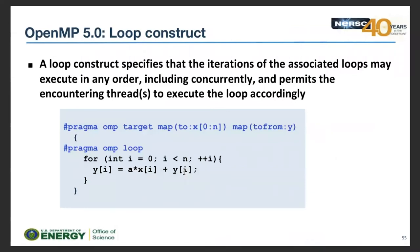The OpenMP 5.0 loop construct works similarly to ACC loop in OpenACC, and ensures your loop is executed exactly once — unlike some other instances in nested loops where it might run more than once.